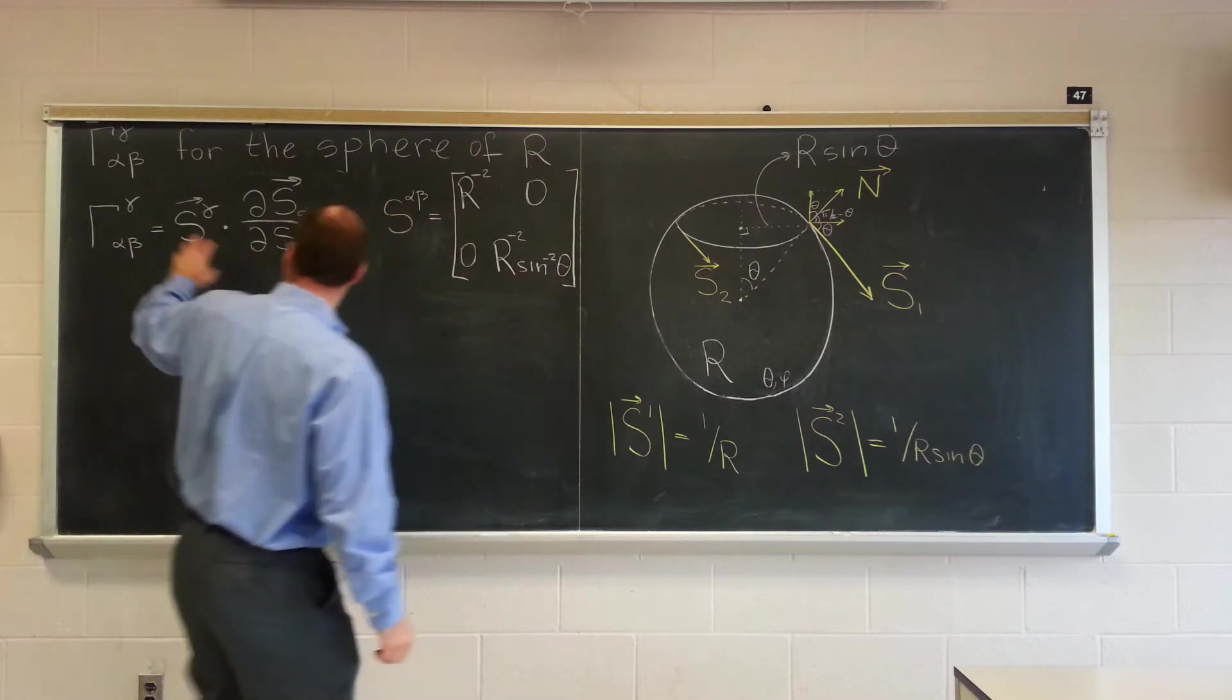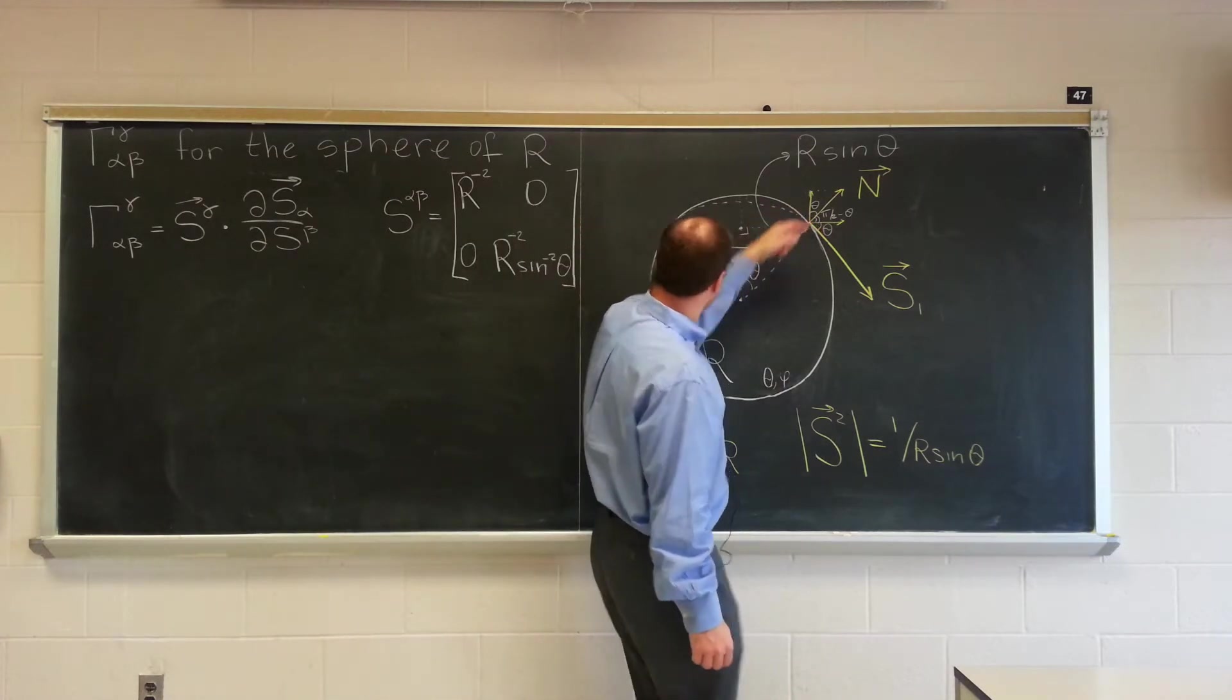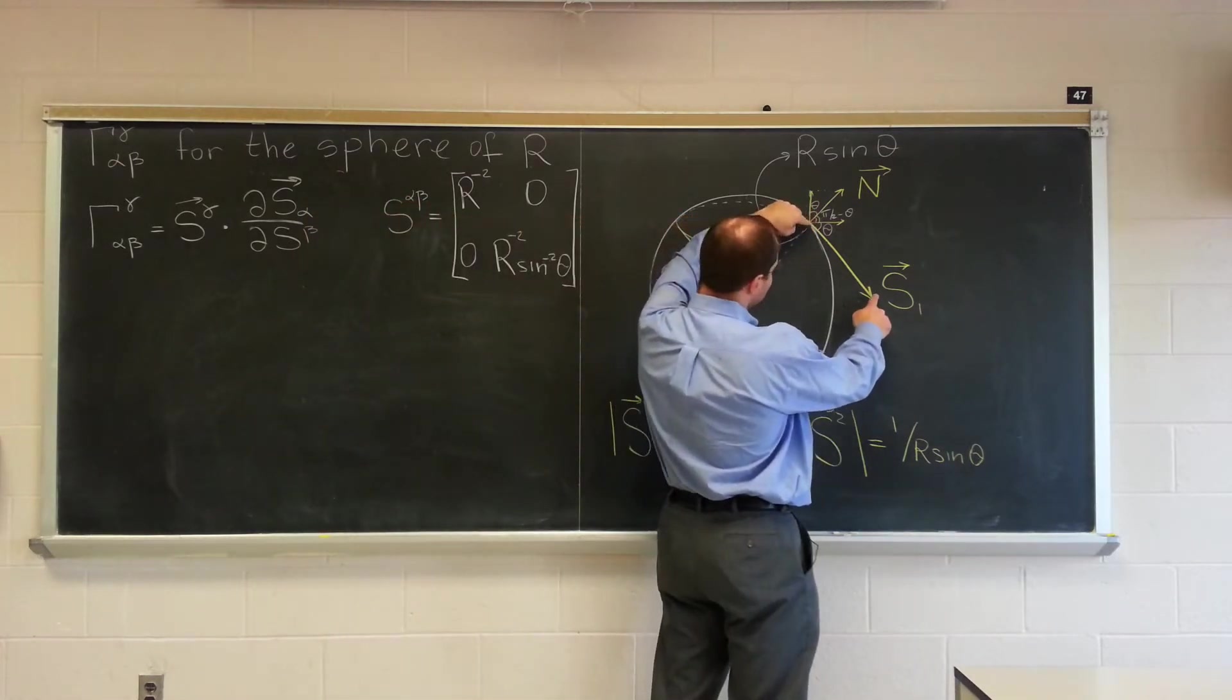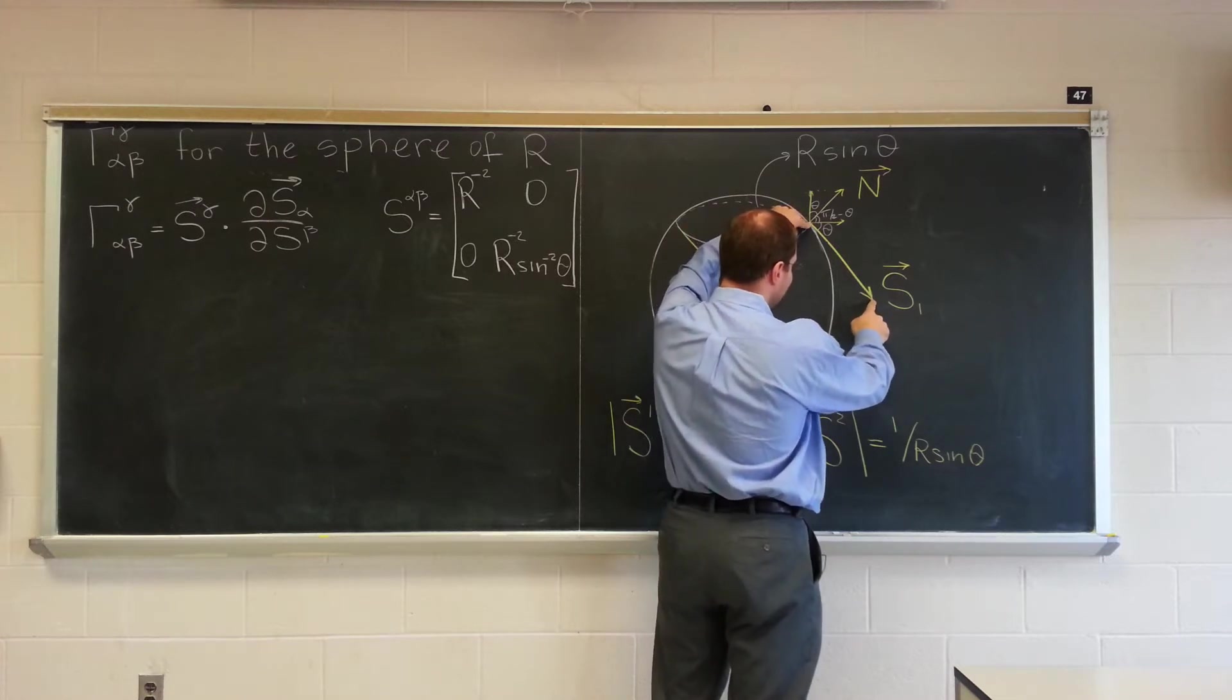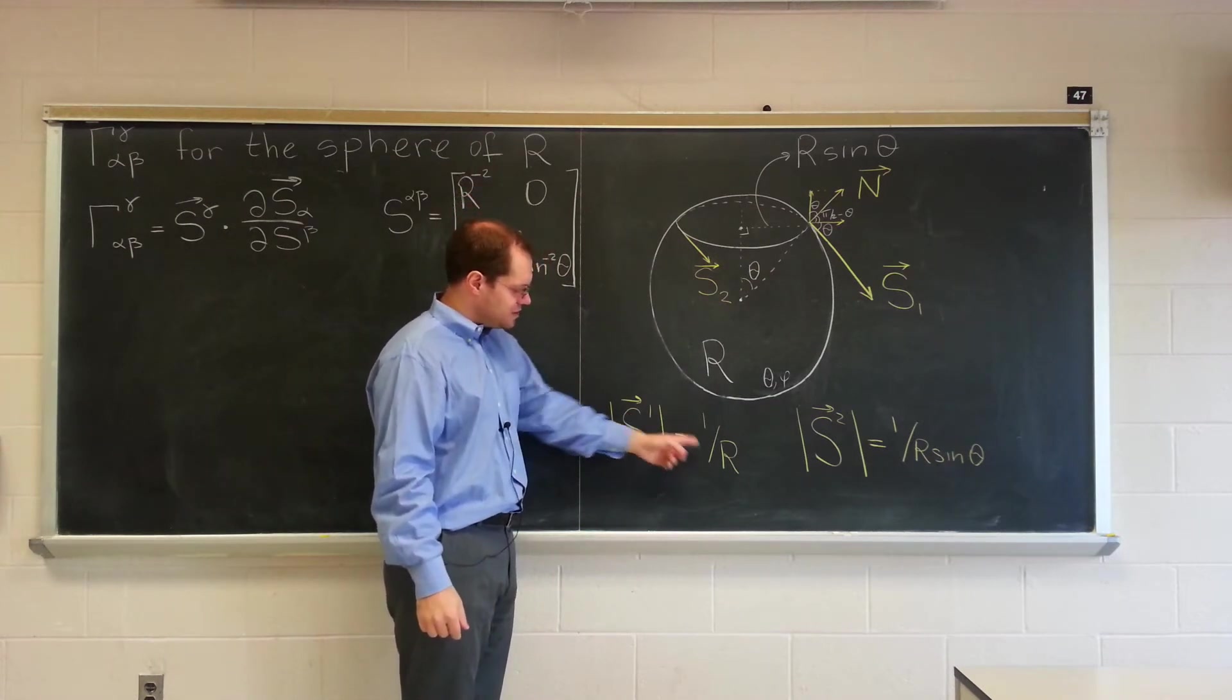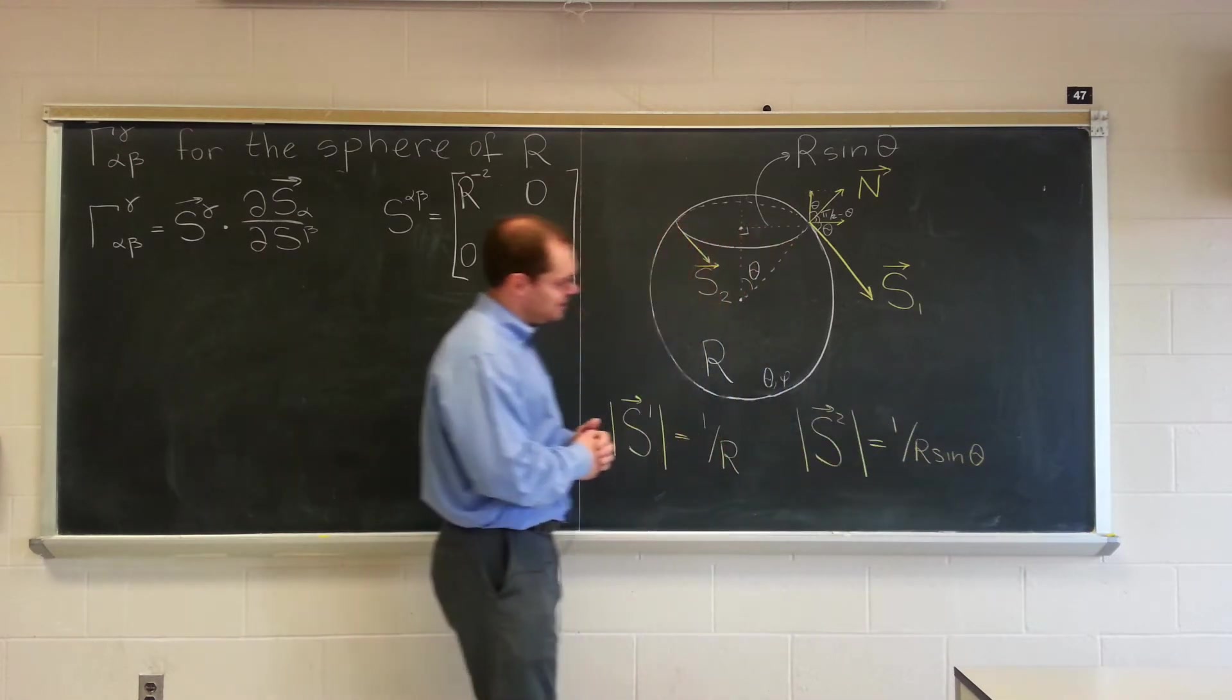Because we'll be dotting with the contravariant basis vector, you need to realize that because this is what the contravariant metric tensor looks like, the contravariant basis vectors will essentially point in the same direction, but their length will change. Instead of length r, it'll go to length r times 1 over r squared, so the length of the contravariant S1 is 1 over r. Similarly, the length of the contravariant vector S2 is 1 over r sine theta.